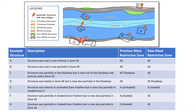This example shows various polygons with associated structures interacting with the CSLF. Structure A was and continues to be located entirely in Zone AE. Structure B was and continues to be located partially in Zone AE. Structure C was previously located partially in a floodway; now it is located out of the floodway but still entirely within Zone AE. Structure D was previously located entirely in Zone AE; now it is located in Zone AE and a floodway. Structure E was previously located in unshaded Zone X; now it is located partially in Shaded Zone X, or the 0.2% chance. Structure F was previously located partially in Shaded Zone X, or the 0.2% chance; now it is located partially in Zone AE. Structure G was previously located partially in Shaded Zone X, or the 0.2% chance; now it is located partially in Zone AE.